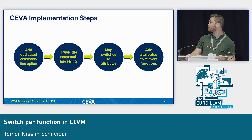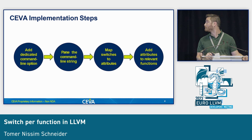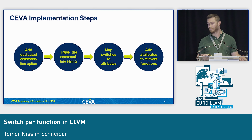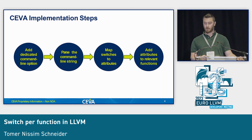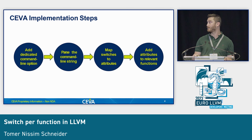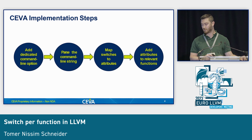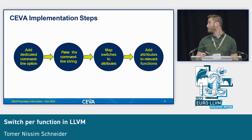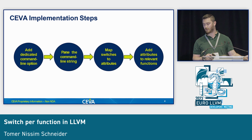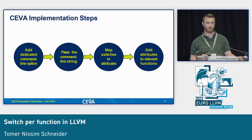So how do we implement it? The first step is to add a dedicated command line option, like I showed you, the '-cxd switch-per-function'. After that, we parse the command line string to understand which part is the function name and which part is the switch we want to affect. The third step is to map the switch to the attribute that already exists in LLVM. And the final step is to add that attribute to the relevant functions, making it behave the same as if you had added the attribute to the source code.